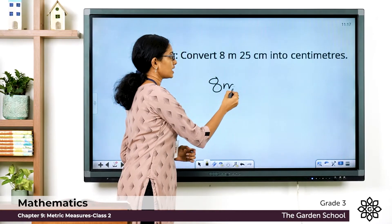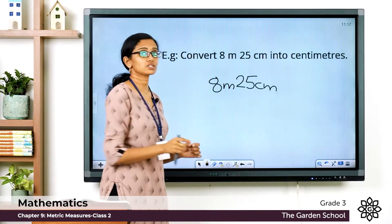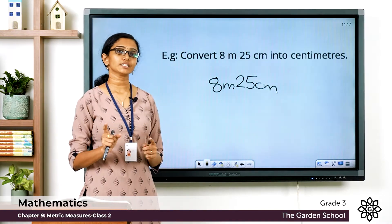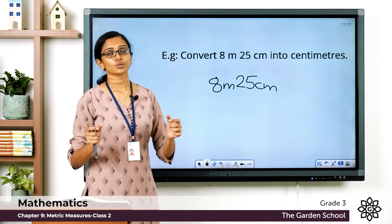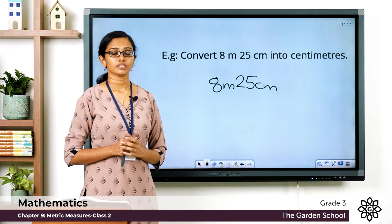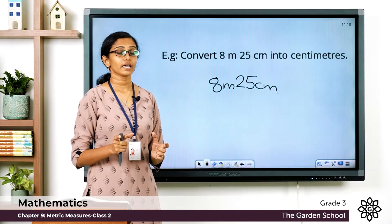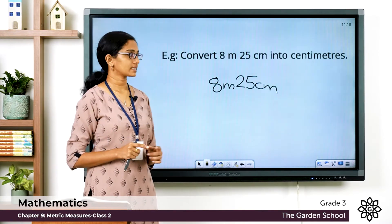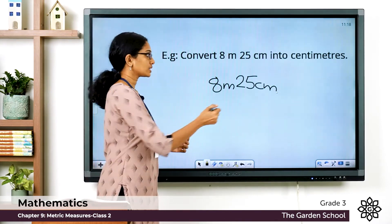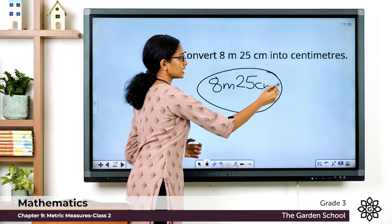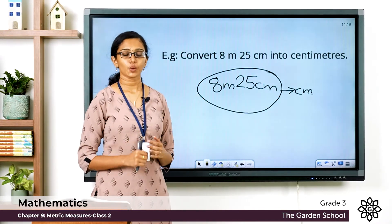Here you are given 8 meters and 25 centimeters. It is not exactly 8 meters but a little more than 8 meters — that is 8 meters and 25 centimeters. Just like you say one and a half is a little more than one, here you are given 8 m 25 cm. We have to convert this into centimeters.